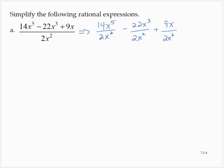So now, using our rules for division and our rules for exponents, I would have 14 over 2 is 7, and then I'd have x to the fifth over x to the second. Subtracting exponents, 5 minus 2 is 3.